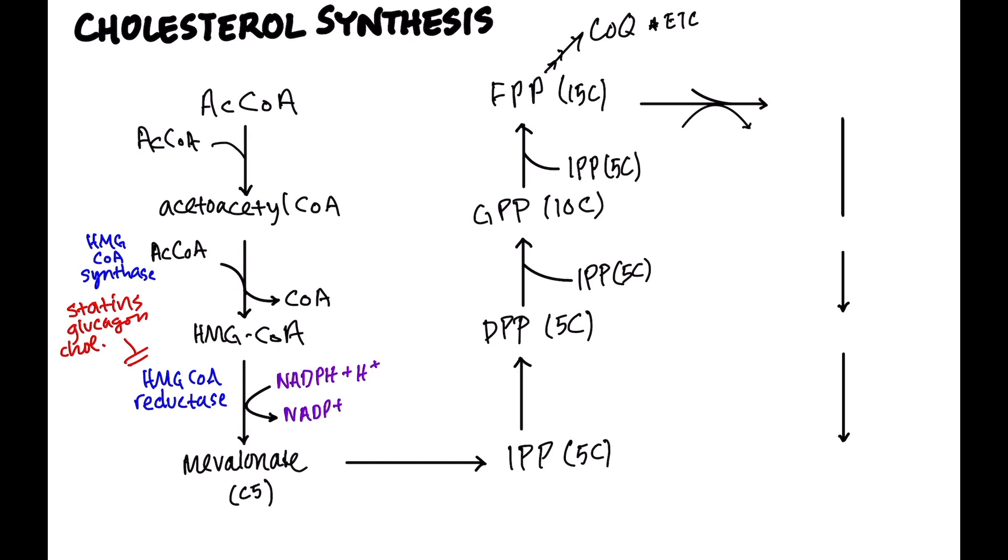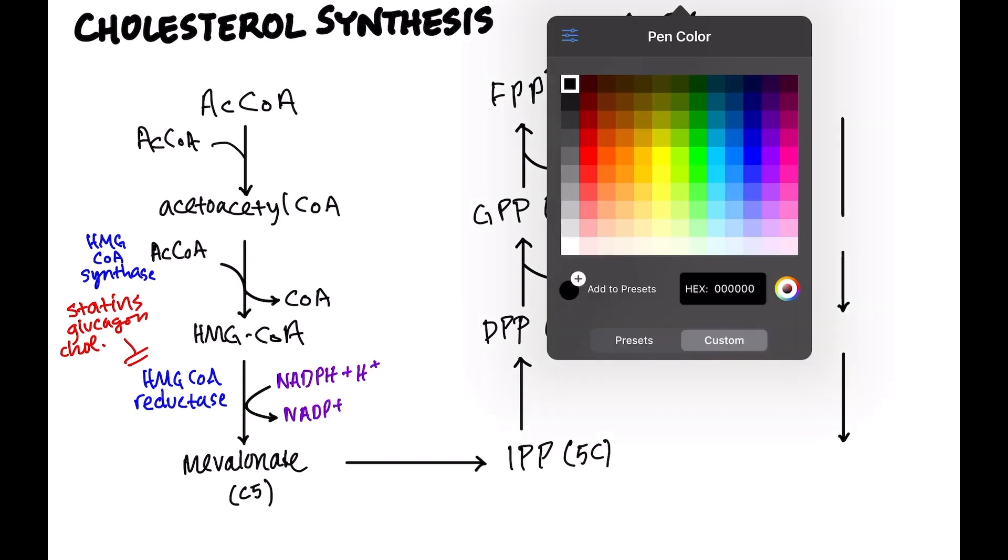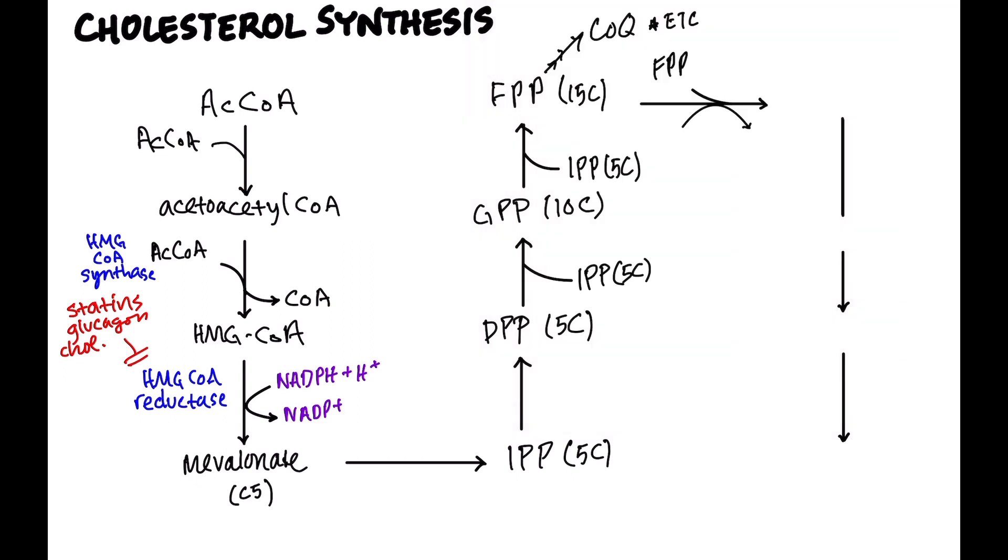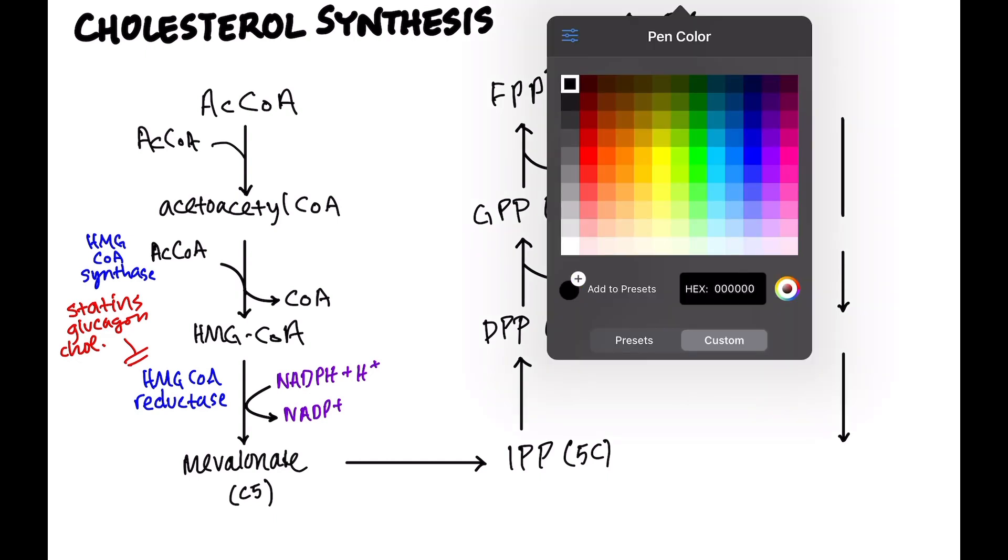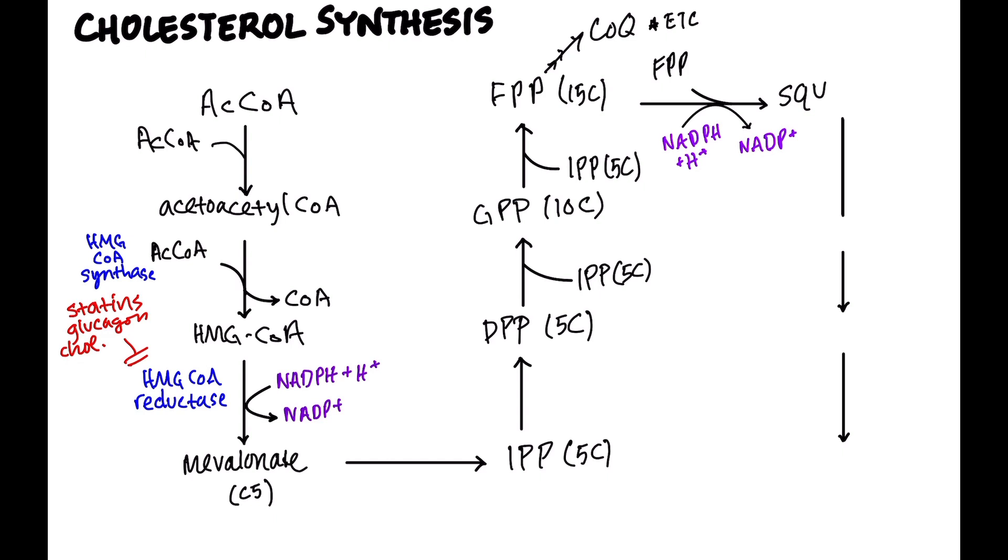So then we have that FPP. It condenses with another FPP. And we have another reduction that happens here. And so we're using NADPH. And we get NADP. And the product here is called squalene. Now, you've probably heard squalene before when we talk about antifungals. Now, this has 30 carbons. The enzyme that does this is not super important, but I will include it. It's called squalene synthase. Pretty easy name to remember. We're making squalene. Squalene synthase.